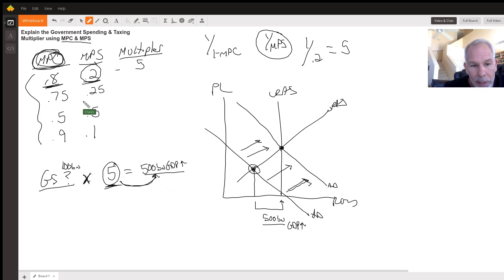Now, obviously, we need to know what our multipliers are. 75, 25, 1 over the MPS, my multiplier would be 4. 1 over the MPS, my multiplier would be 2. My multiplier would be 10. Know these. Know how to figure these out. Know how to find the multiplier.